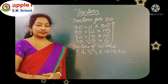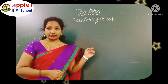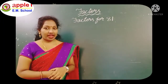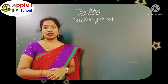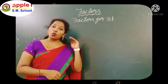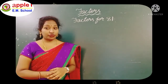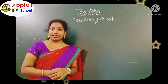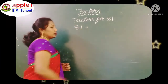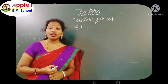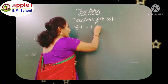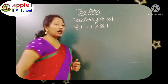Understood, children? Let us see another example. Factors of 81. Always we have to start checking from the 1 table. 81 will come in the 1 table: 1 eighty-one is 81.